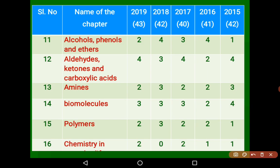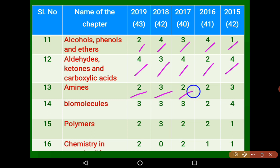Alcohols, Phenols, and Ethers had 2 marks in 2019, 4 marks in 2018, then 3, 4, and 1 mark in earlier years. Aldehydes, Ketones, and Carboxylic Acids had 4 marks in 2019, 3 in 2018, 4 in 2017 — a very important chapter — then 2 and 4 marks. Amines had 3 marks last year, 3 in 2018, 2 in 2017, 2 in 2016, and 3 in 2015.